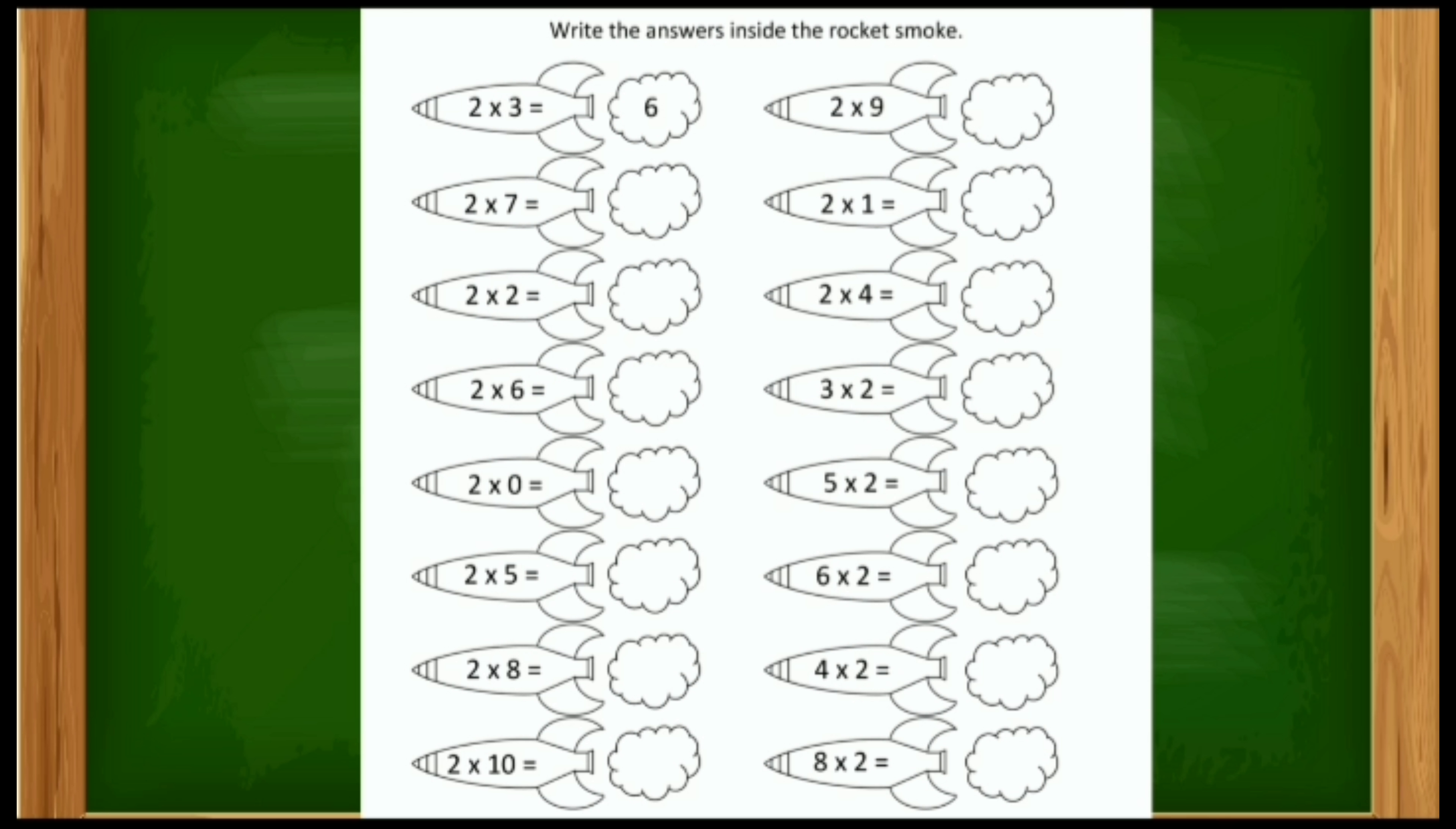Now, tell me, write the answers inside the rocket smoke. Two threes are six. Then two sevens are, tell me. Two sevens are fourteen. Two twos are four. Two sixes are twelve. Two zeros are, when we multiply any number with zero, we will get zero.